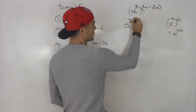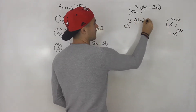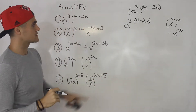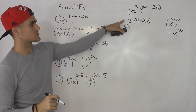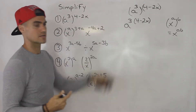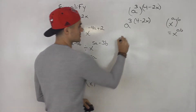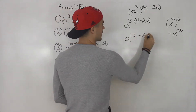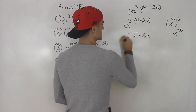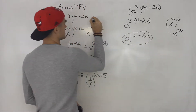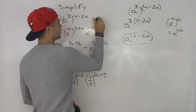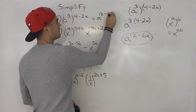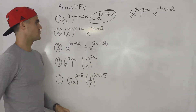So we take this, multiply it by that whole bracket, four minus two x, and then we simply distribute the three inside the bracket. So we'll have a to the power of 12 minus six x. That's the answer for number one: a to the power of 12 minus six x.